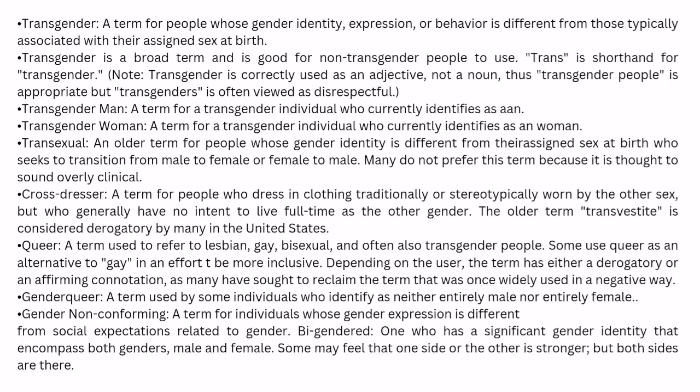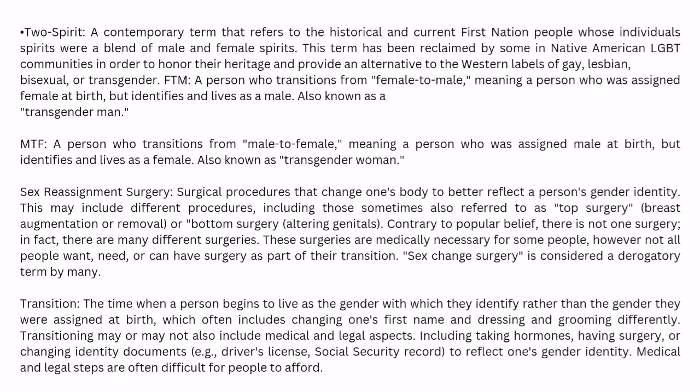Types of queer identities: Genderqueer is a term used by individuals who identify as neither entirely male nor entirely female. Gender non-conforming refers to individuals whose gender expression is different from societal expectations related to gender. Bi-gendered refers to one who has a significant gender identity that encompasses both genders — male and female — and may feel one side is stronger, but both sides are present. Two-spirit is a contemporary term referring to historical and current First Nations people whose individual spirits were a blend of male and female, reclaimed by some in Native American communities as an alternative to Western labels of gay, lesbian, bisexual, or transgender.